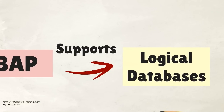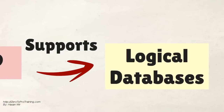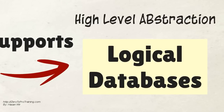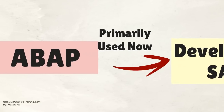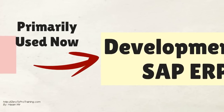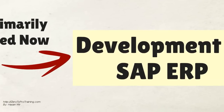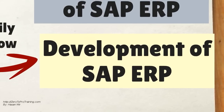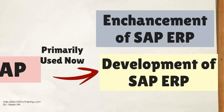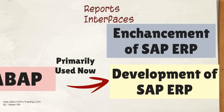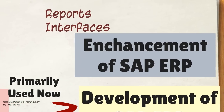SAP R2 applications were mainly used for materials management and financial management. ABAP was one of the first languages to include the concept of logical databases, known as LDB. Logical databases provide high-level abstraction for databases. The ABAP language was originally used by developers to develop the SAP R3 platform, which is the next generation of SAP ERP software after SAP R2. It was also intended to be used by SAP customers to enhance SAP applications.